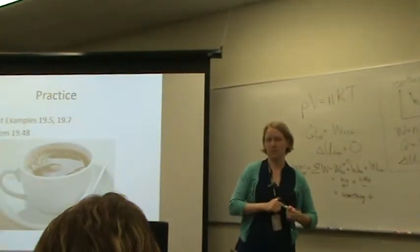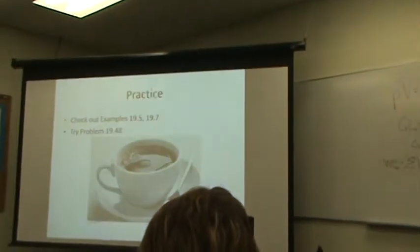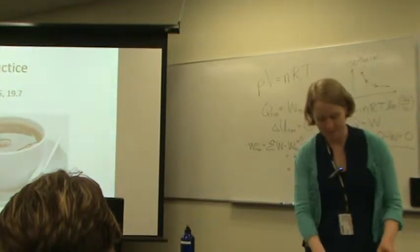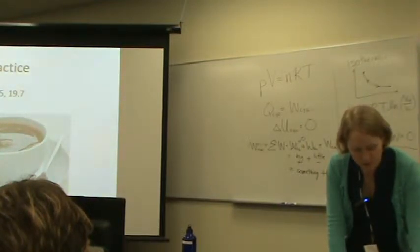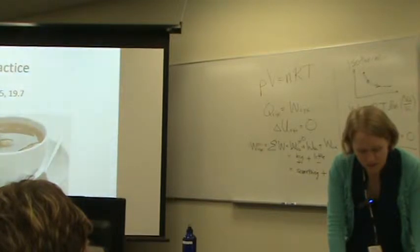So we'll look at a couple examples and see about these problems. Okay, example 19.5. One gram of water, which is one cubic centimeter, becomes 1671 cubic centimeters of steam when boiled at constant pressure at one atmosphere. The heat of vaporization for this pressure is L sub V equals 2.256 times 10 to the sixth joules per kilogram. Compute the work done by the water when it vaporizes and its increase in internal energy.